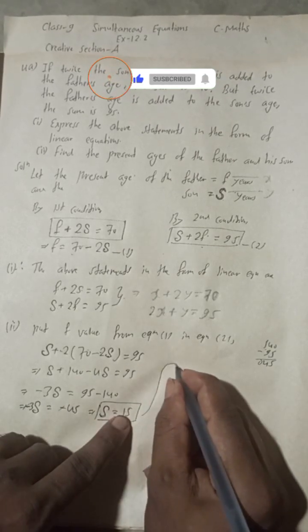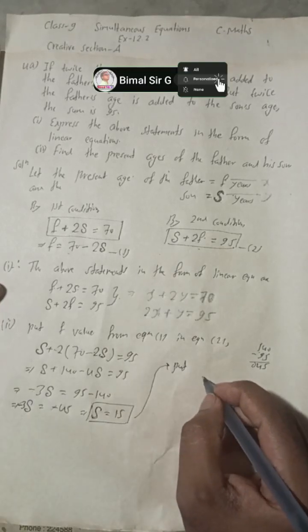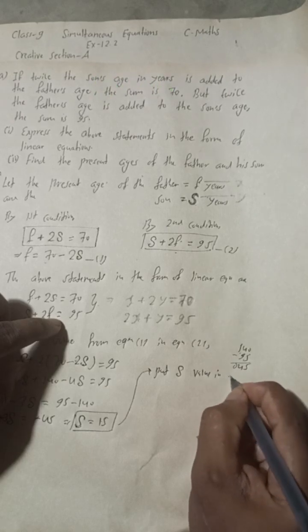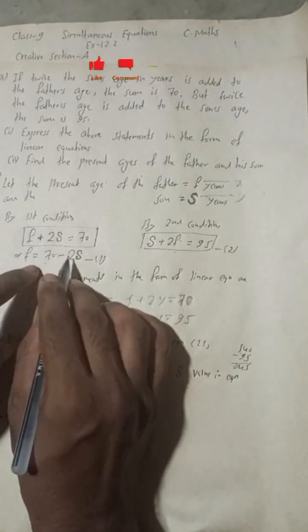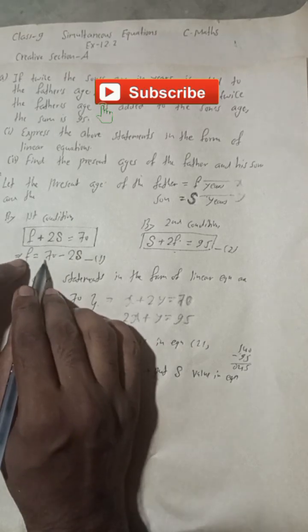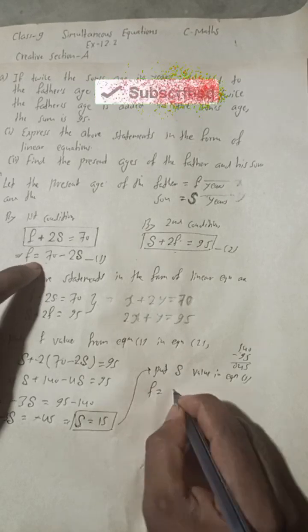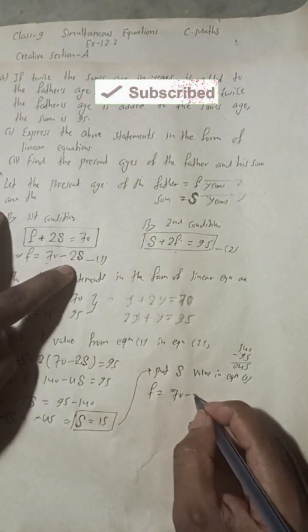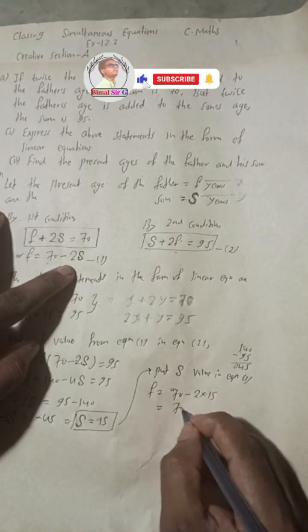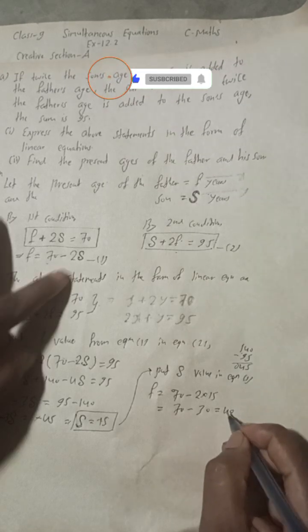Now put the value of S back into equation one: F = 70 − 2S = 70 − 2 × 15 = 70 − 30 = 40. So the father's age is 40 years.